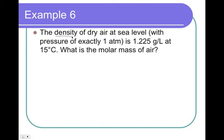Example 6: What is the density of dry air at sea level with pressure of exactly one atmosphere? The word density right there tells us that we're using MP = DRT. It is 1.225 grams per liter at 15 degrees Celsius. What is the molar mass of air? I know that air is not a compound, it's a mixture, but we're still going to use this to calculate the average mass of one mole of air particle mixtures.